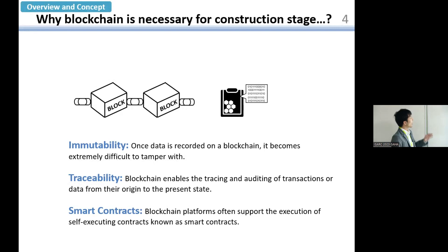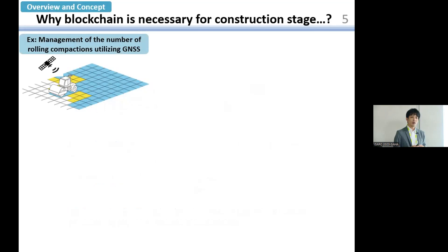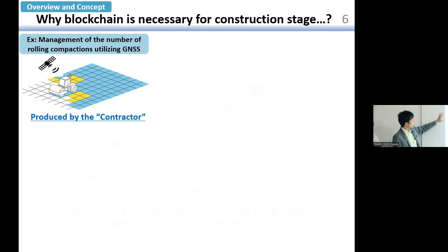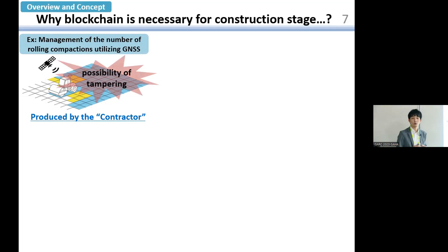Let me start my presentation from this question: why is blockchain necessary for the construction stage? As everyone knows, recently ICT technology has been implemented at construction sites, and we can use the information to manage as-built data and quality control. For example, we can manage the number of rolling compactions using GNSS. But here is one problem: this information is produced by contractors, which means there is a possibility of tampering.